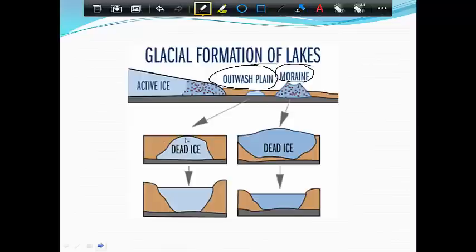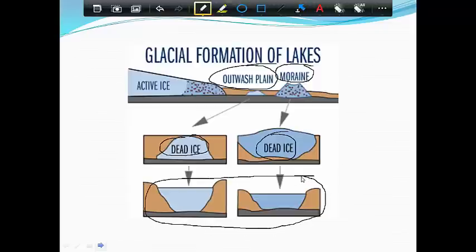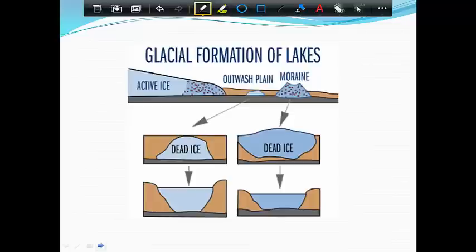And these are considered dead ice because they don't move anymore. They're not connected to the main glacier and so they're not retreating with the main glacier. Over time they melt and what we have left are lake basins that have been gouged out by the glacier and then the water left behind is from the glacier as well. So the majority of lakes in Minnesota are formed this way from the glaciers retreating.